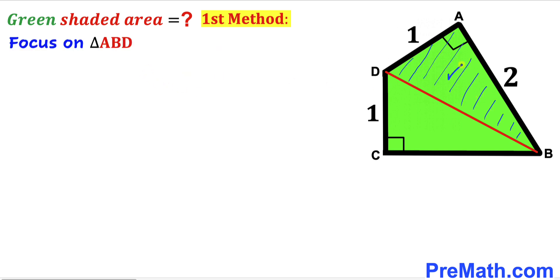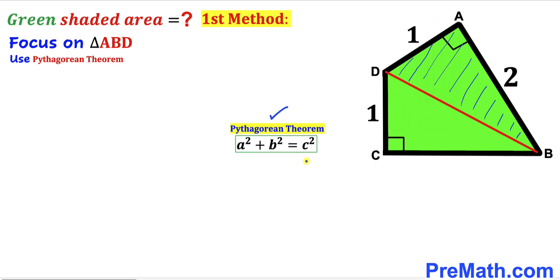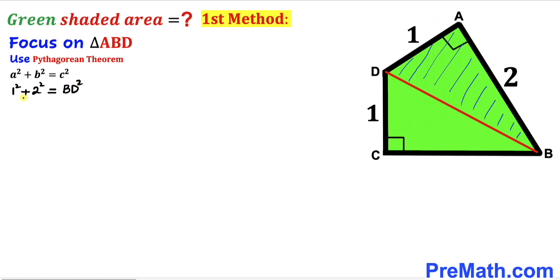Let's focus on triangle ABD and apply the Pythagorean theorem to find the hypotenuse BD. Using A² + B² = C², our hypotenuse is BD and the two legs are 1 and 2. So: 1² + 2² = BD², which gives us 1 + 4 = BD², so BD² = 5. Taking the square root of both sides, BD = √5 units.